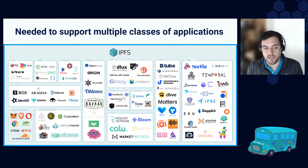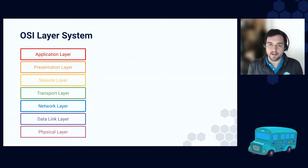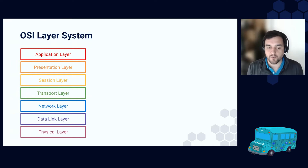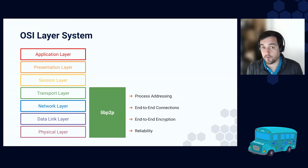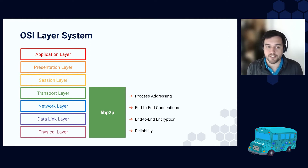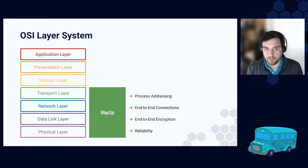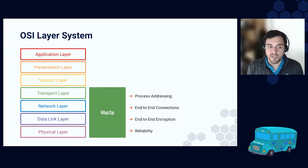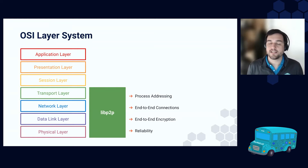To help us throughout this presentation, I'll use the OSI layer system to guide us and give us a map of the multiple pieces available and how they map to this layer system. Starting with libp2p — we're going to take this for granted during this presentation. Libp2p is a networking stack of IPFS, now of Ethereum 2 as well, Filecoin, and many other projects. It gives us the property of process addressing: we can dial any other process in the network using a public-private key pair, getting end-to-end encrypted and reliable connections over any kind of transport.